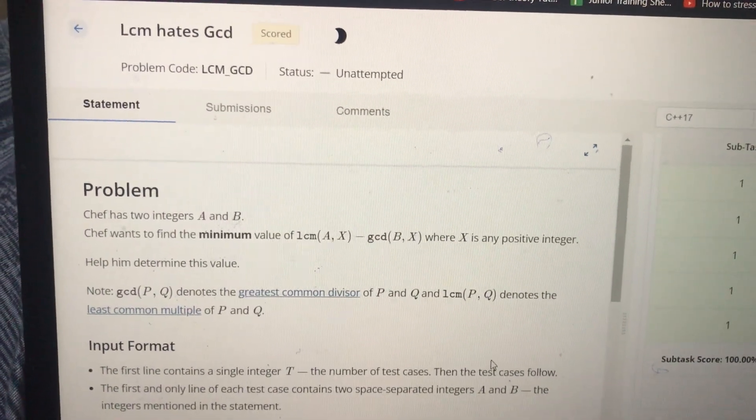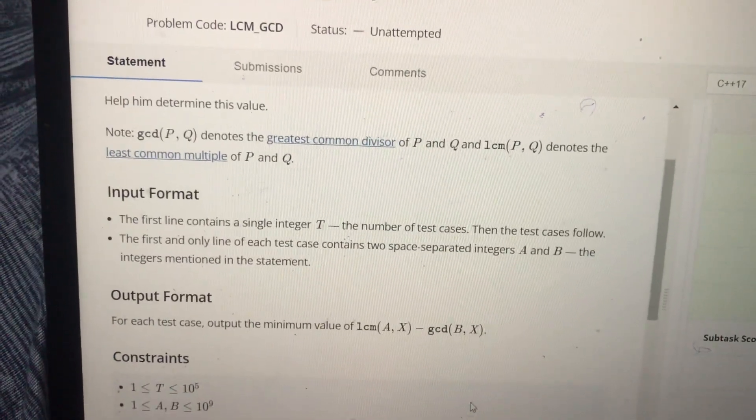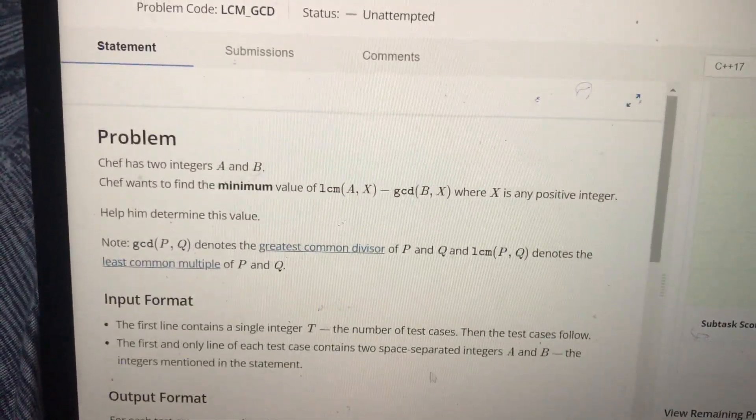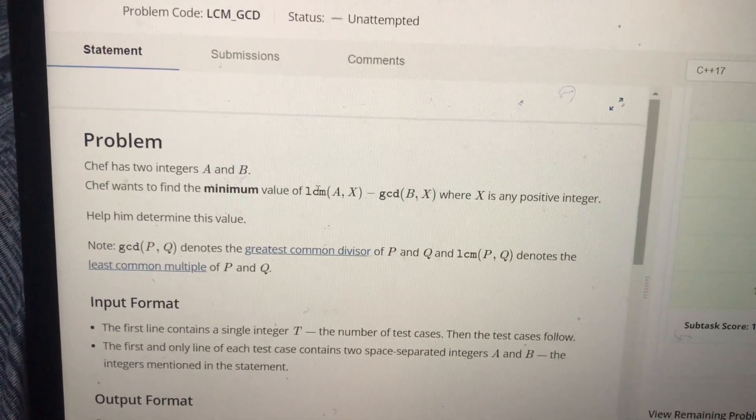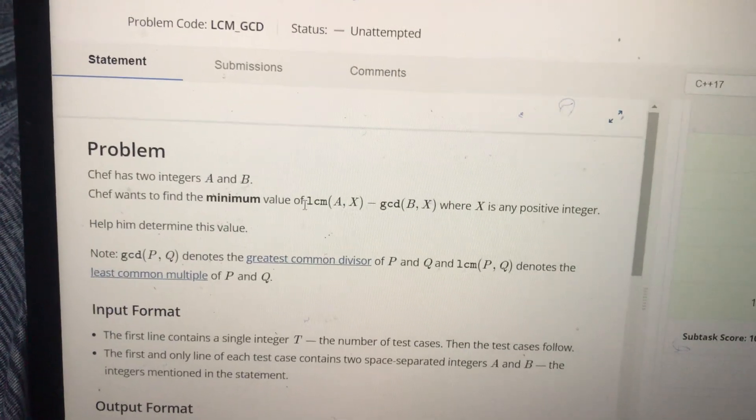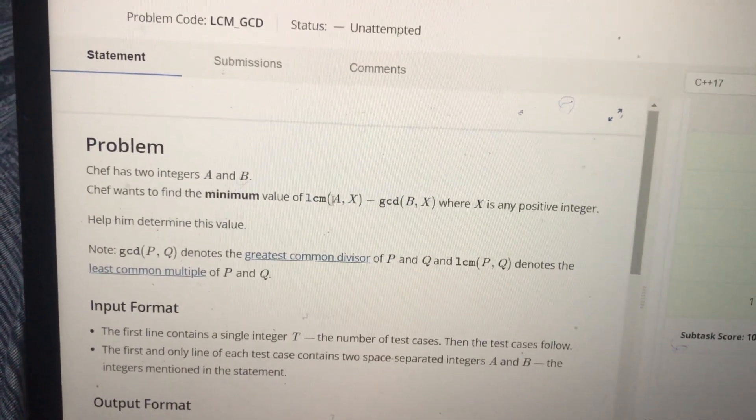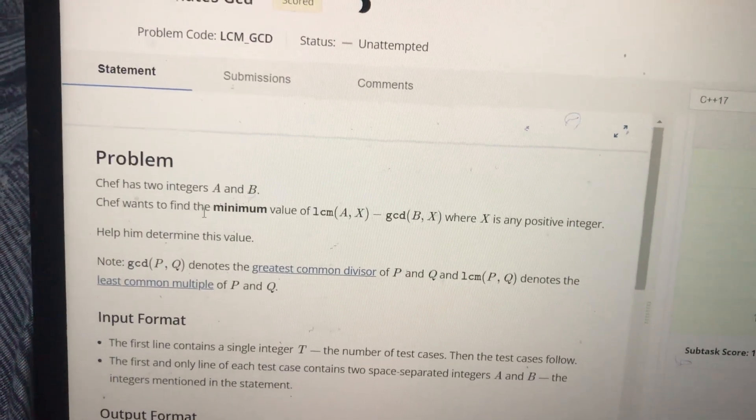Hello everyone, so today in this video we're going to be discussing this question LCM GCD, which has occurred on CodeChef Starters 74. What the question is saying is that we have two integers A and B, and we have to output integer X.